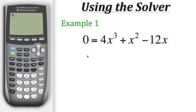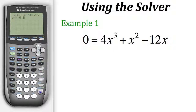First, in order to get to the solver feature on the calculator, you need to push the math button, and then scroll all the way down to the bottom until you get to the solver. Then you can hit enter. At this point the calculator already has zero equals written out for us, so we just need to type in the rest of the equation. So we'll put in 4x cubed plus x squared minus 12x, and then hit enter.